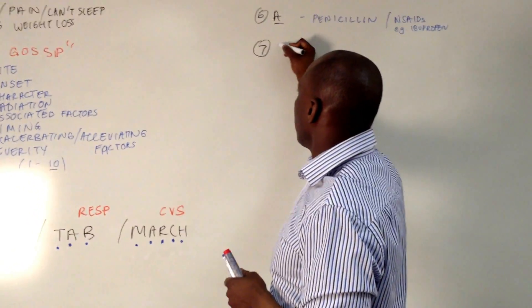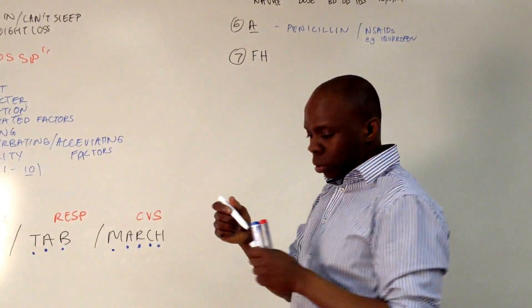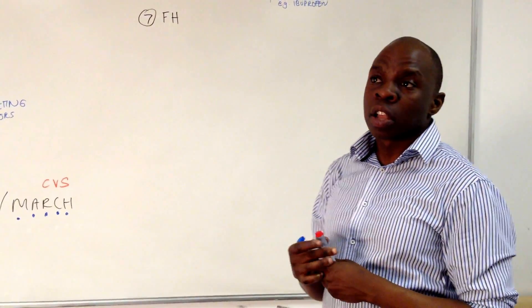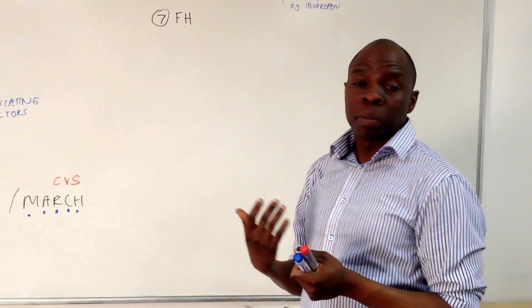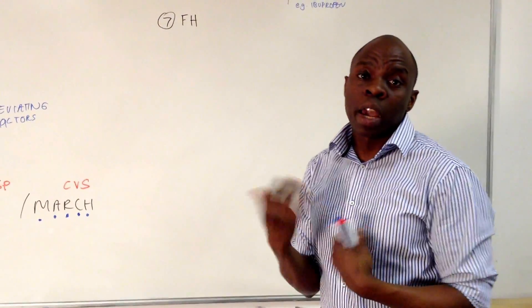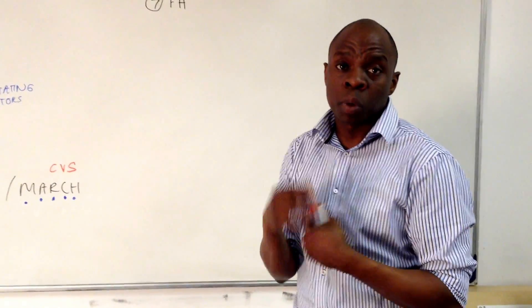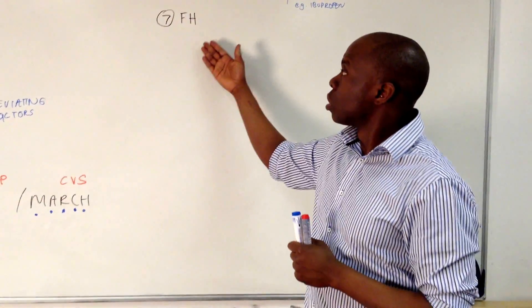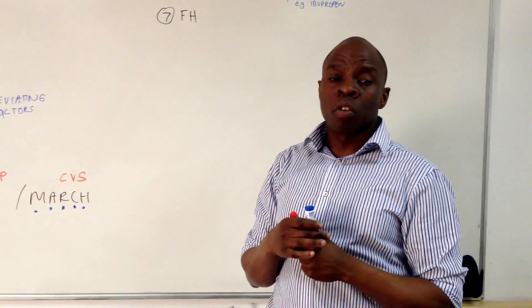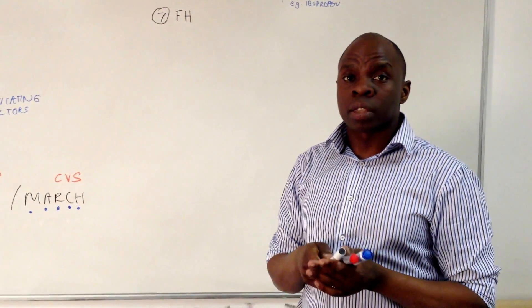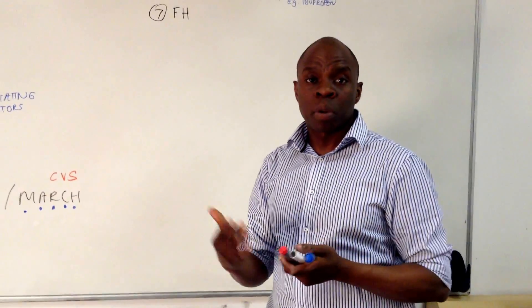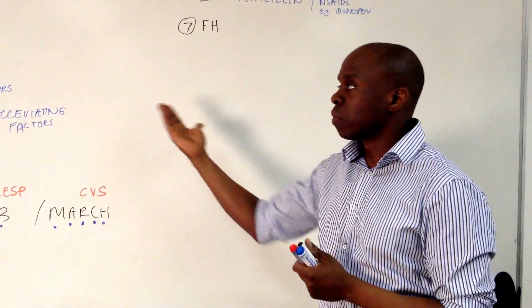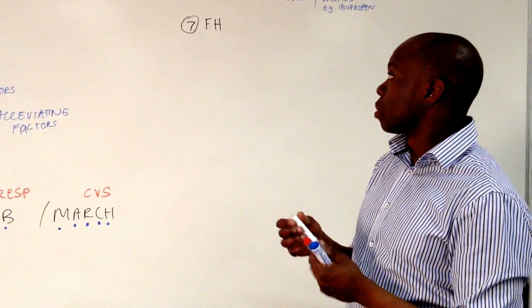Then we move on to FH — family history. In family history, we're trying to find out if there are any conditions in the family which may have a bearing on this case. My opening question is: 'Are there any conditions you know of running in your family which we may need to know about?' If they're an elderly person, you can also ask: 'Did your parents both live to a good age?' You can then find out if somebody died prematurely and what they died of, which may indicate something genetic predisposing this individual to a similar problem.